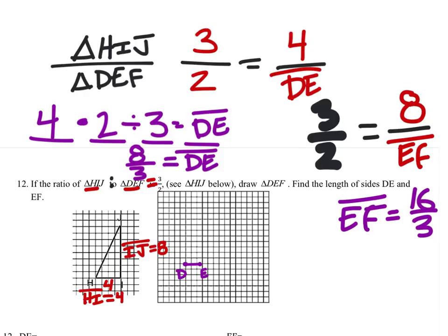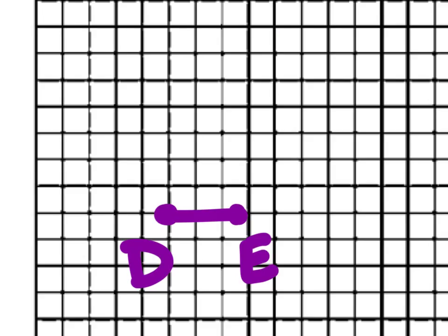So I need to go into that graph and graph it. So from E, I will go up 5 and a third: 1, 2, 3, 4, 5 and a third, maybe about right there.